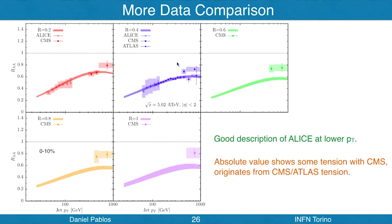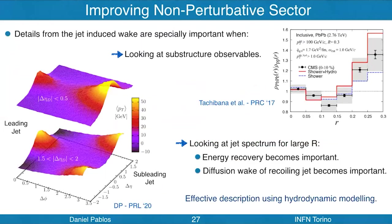If the energy has been deposited in a very boosted region that did not have time to develop, the angular distribution may be very narrow and much of the energy remains in the cone. This can also be useful for tomography applications. Moving to conclusions: